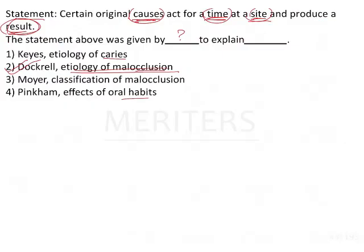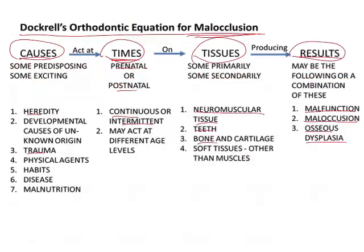Moyer's classification of malocclusion was based on Dockrell's etiology of malocclusion — he based his classification of the formation of malocclusion on the etiology given by Dockrell. Now, regarding Keyes' etiology of caries and Pinkham's effects of oral habits.